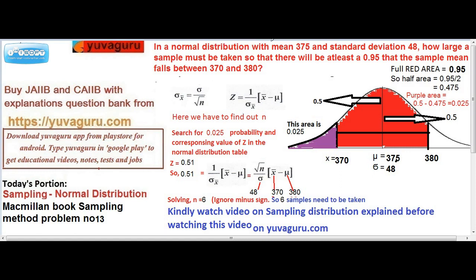In a normal distribution with mean 375, the population mean is 375, standard deviation is 48. How large a sample must be taken? We have to find out the sample size, that is small n. So that there is at least 0.95 probability, that the mean falls between 370 and 380.